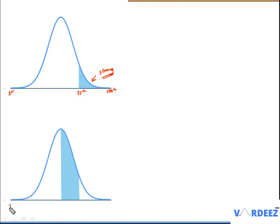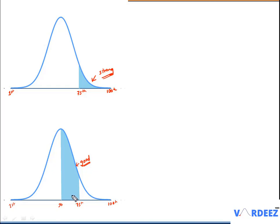If you see something like this, that means you are from the 50th percentile to the 75th percentile, and this also reflects a good understanding of the subject. That means you are in this zone in the second quartile, just below the first quartile.